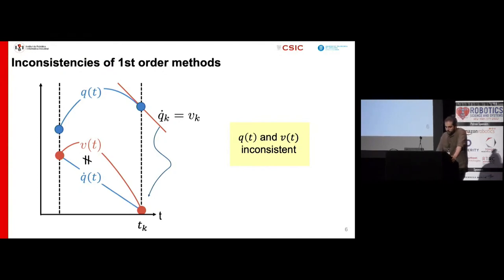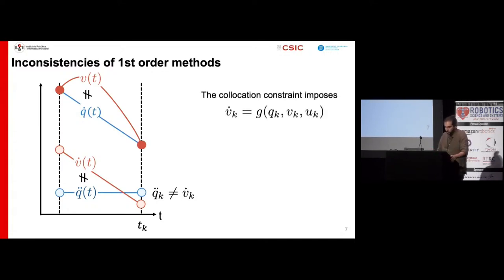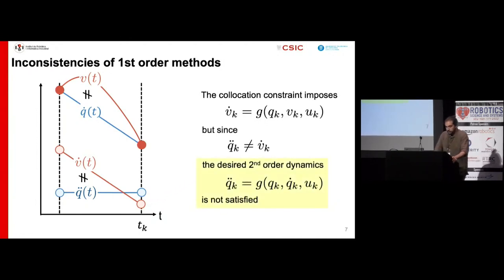Moreover, since the two curves do not coincide, the derivatives will be different too. In this case, their values will be different even at the collocation points, because no constraint is imposing their coincidence. So, we have that the collocation constraint imposes this condition, but we have that these two values are different, so the second-order dynamics equation is not satisfied at the collocation points.